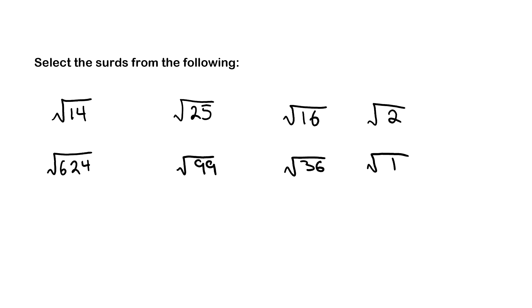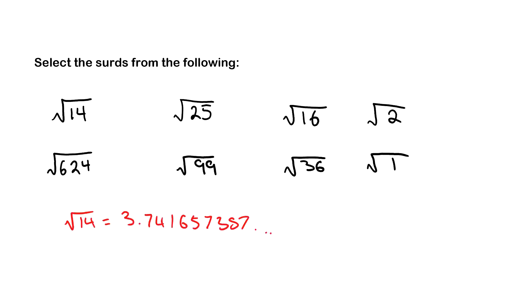Now we'll answer a question where we need to select the surds from a given list. The easiest way is to use a calculator. If I put root 14 into my calculator, I get 3.74165738... and then the calculator stops. This is a surd because there's no pattern to the decimals and it doesn't terminate — it does keep going on. So I'll circle that as a surd.